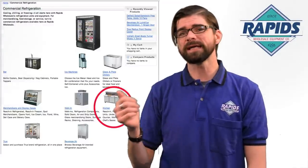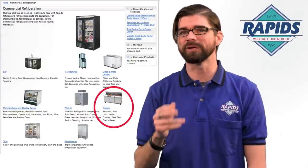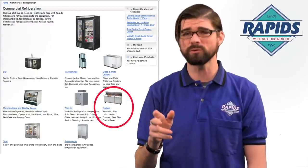When you click on the kitchen refrigerators category, you'll likely be impressed with the huge selection of reach-in coolers, prep tables, under-counter fridges, and worktop fridges.